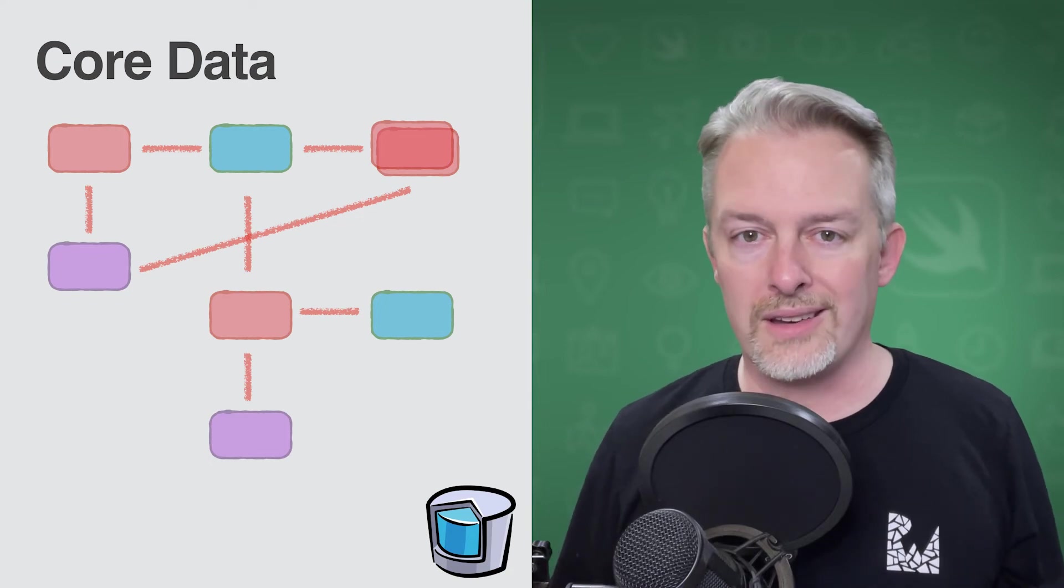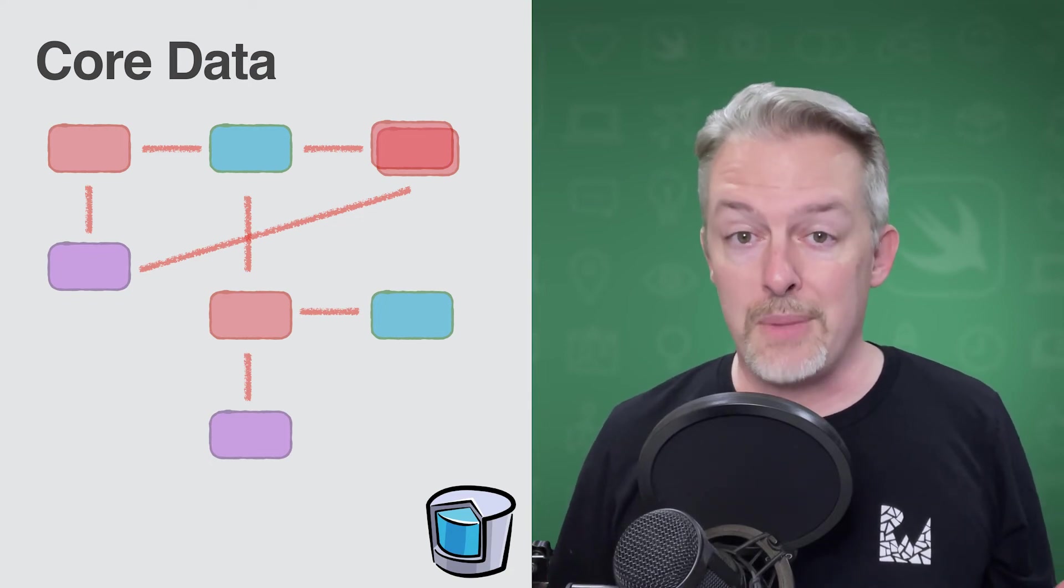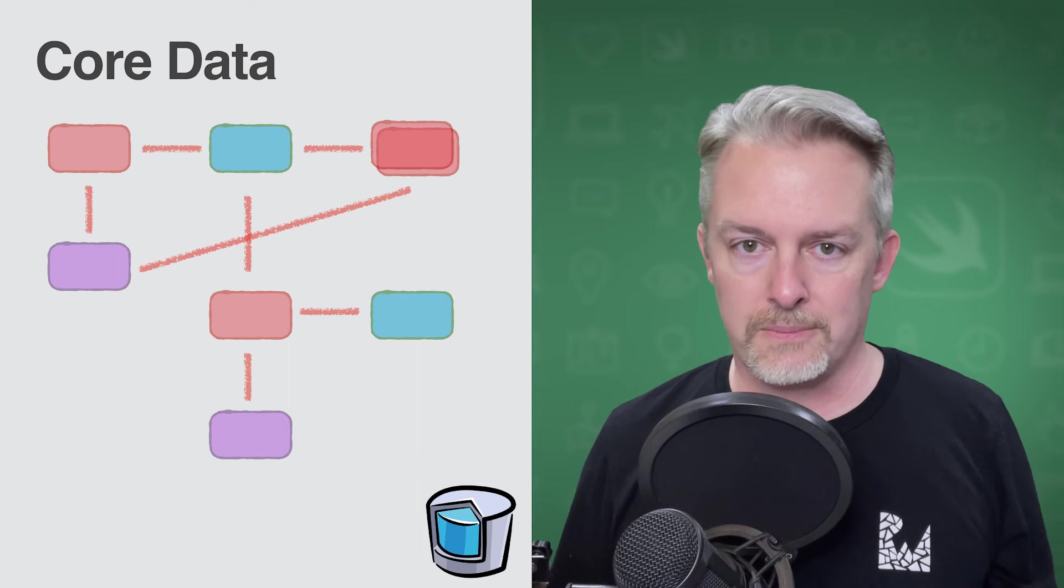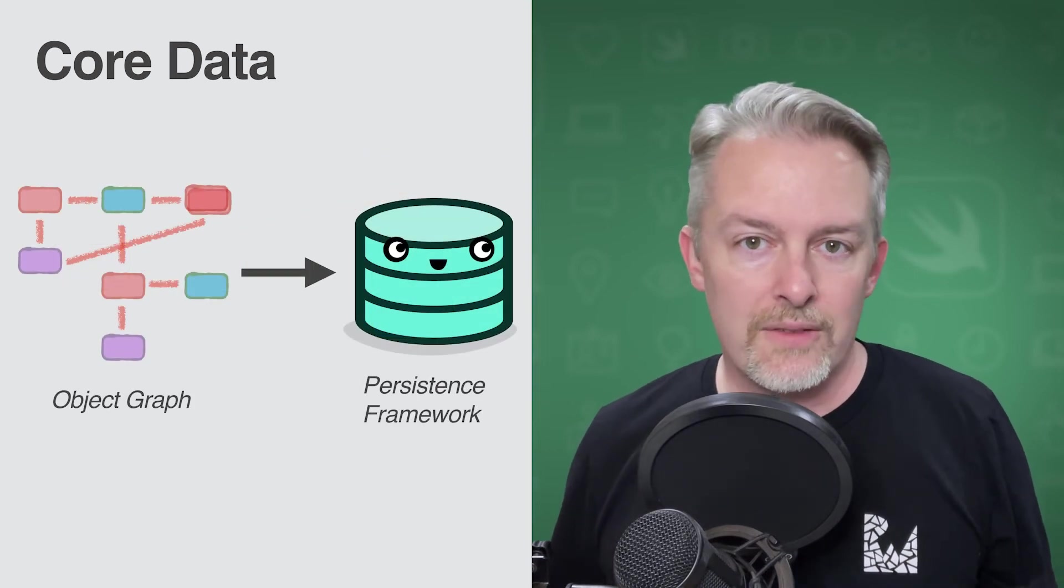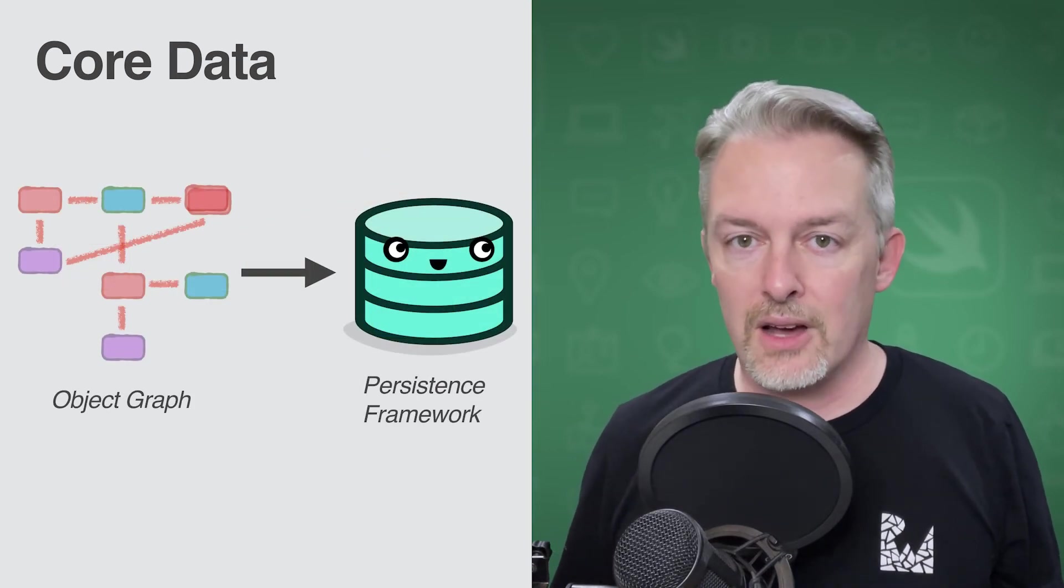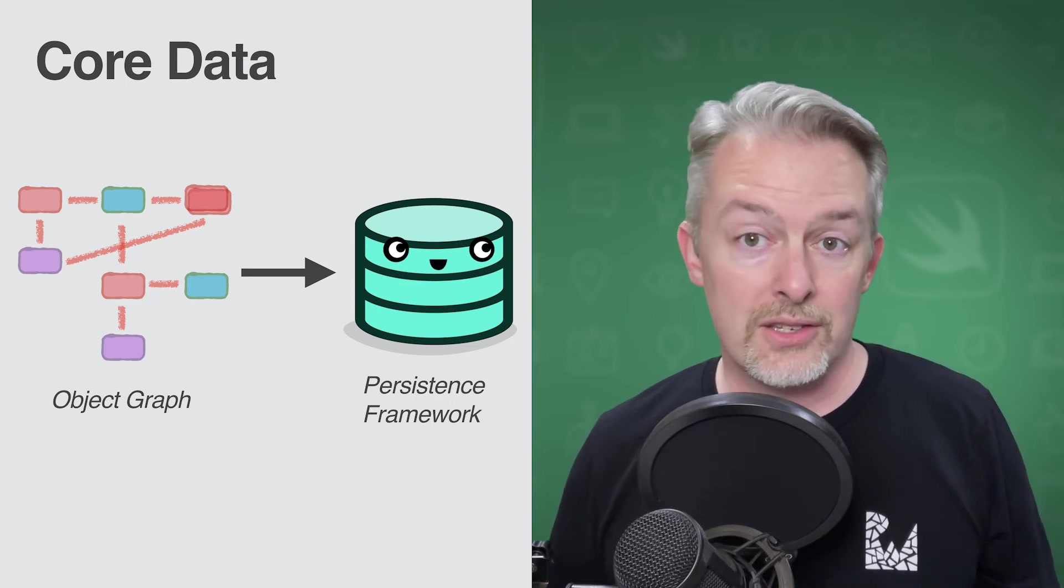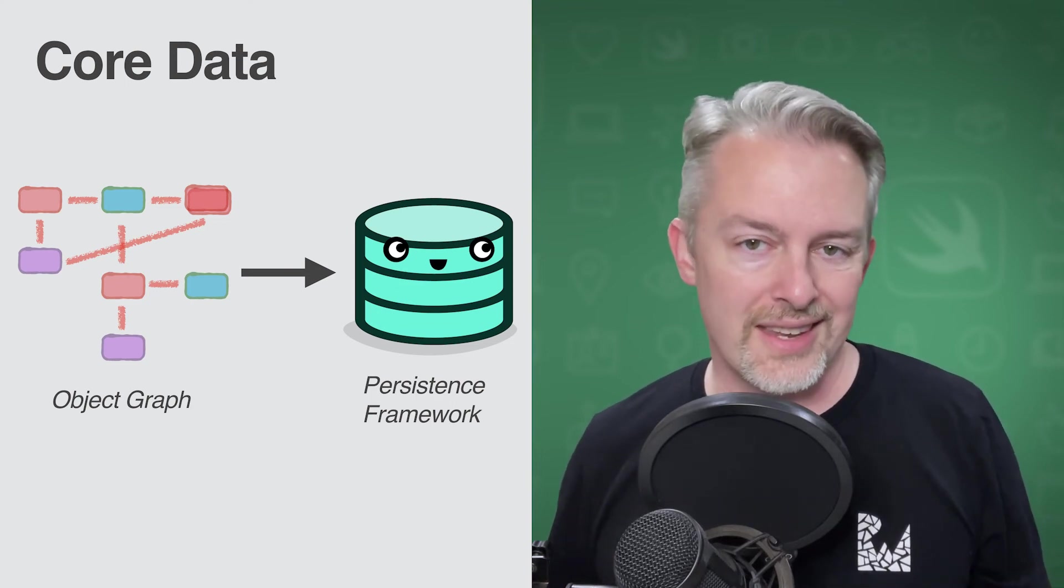This is part of what Core Data does for you. It manages the Object Graph. But once you have instances of these objects in the Graph, you also need to save, update, and delete them based on all the user preferences and interactions.